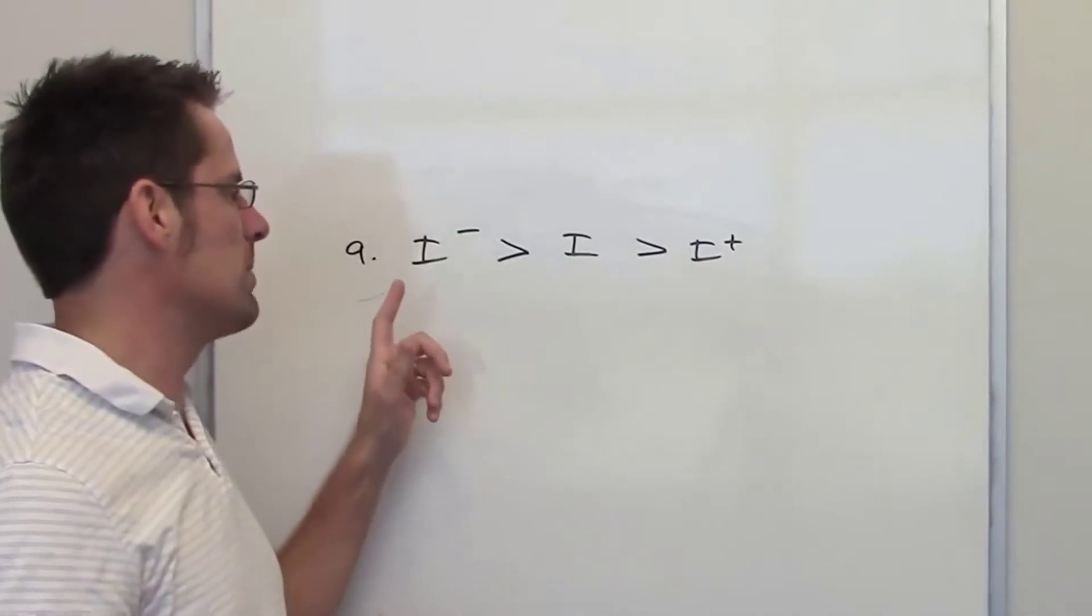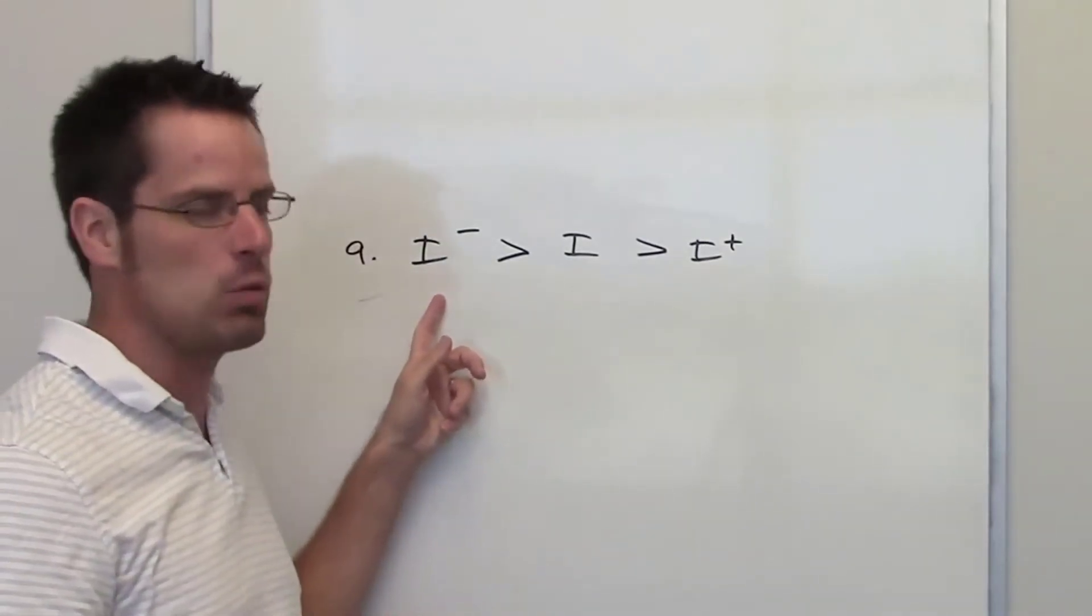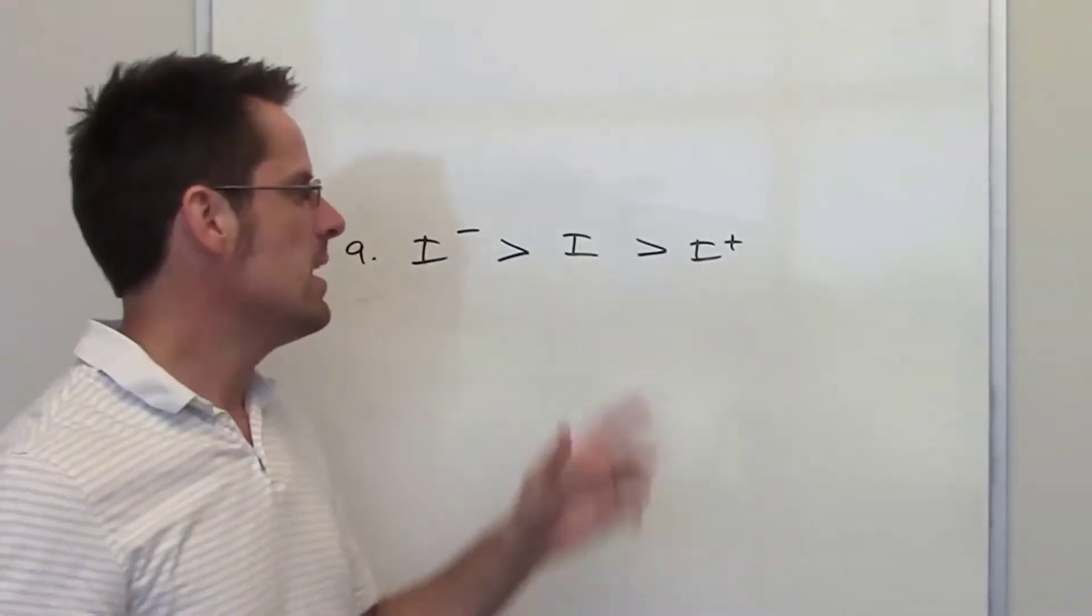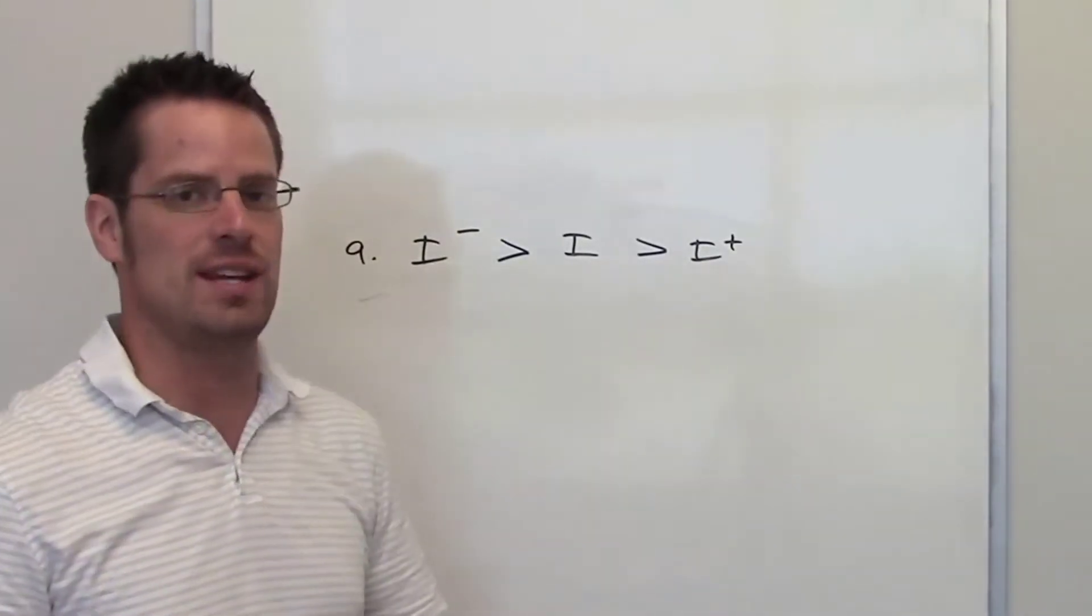Therefore, the one with the most electrons, iodide, will be larger than neutral iodine, which will be larger in size than iodine that has lost an electron, that is iodine cation.